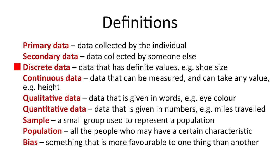Discrete data is data that can take certain values. That could be for example shoe size — it has a definite value to it and we can only select certain ones within an experiment. Continuous data is data that can be measured and can therefore take any value depending on the scale we're measuring with. An example of continuous data would be height.